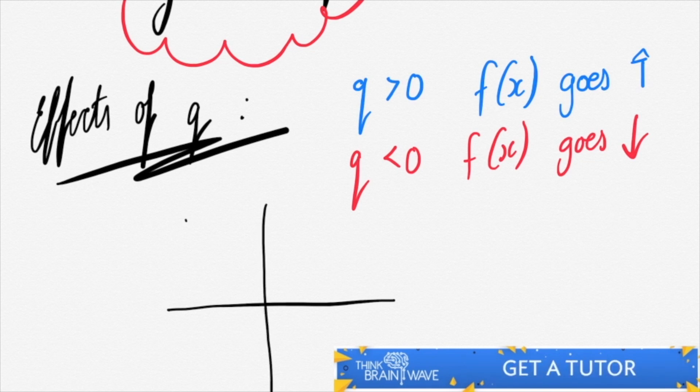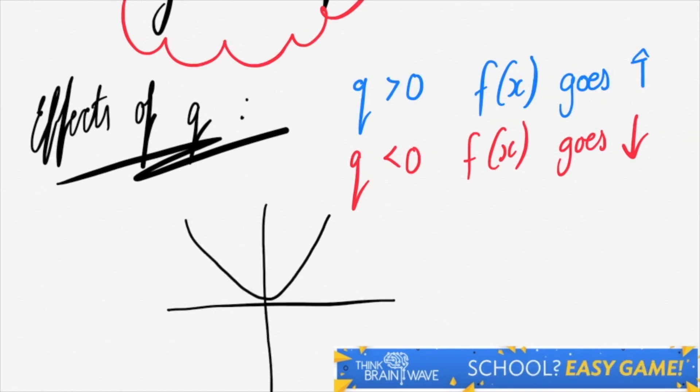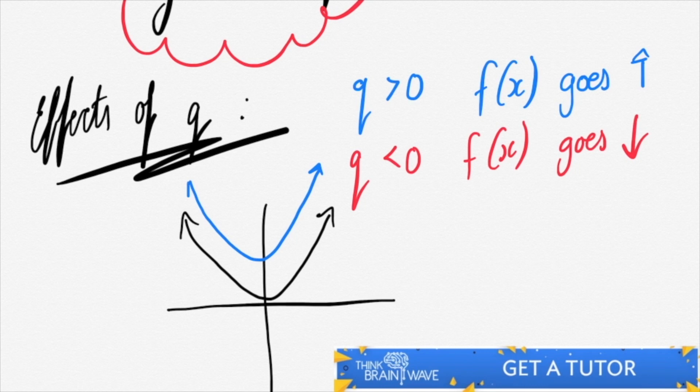Here's our set of axes. We'll draw a parabola that goes through the origin. So if q is positive, it shifts upwards by however much positive it is.